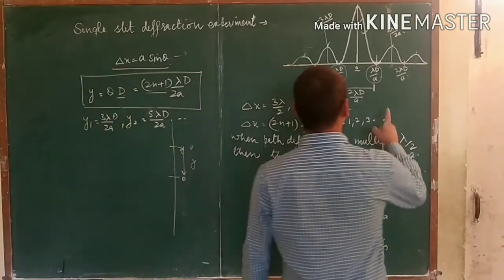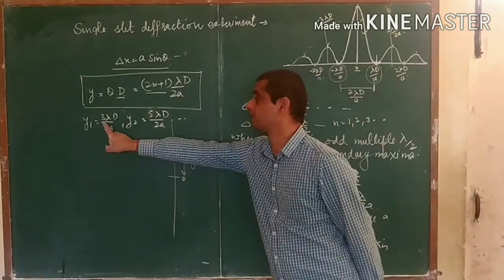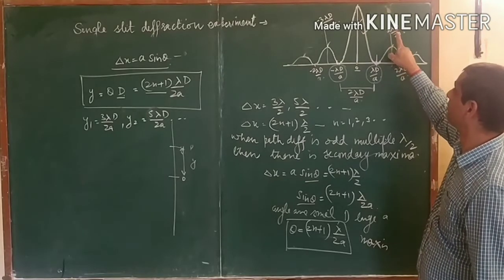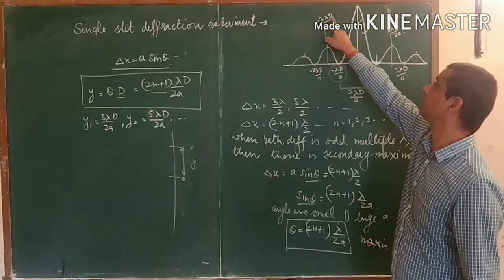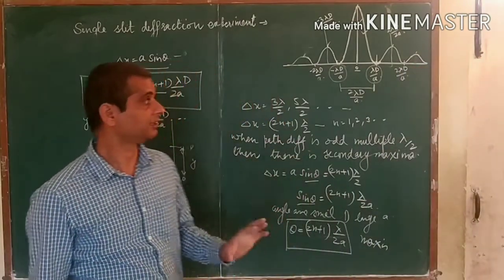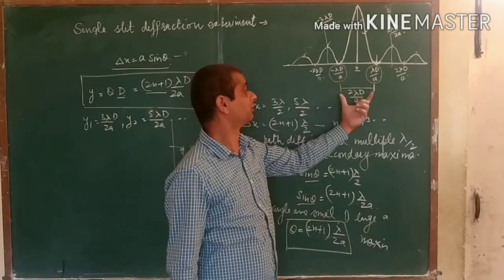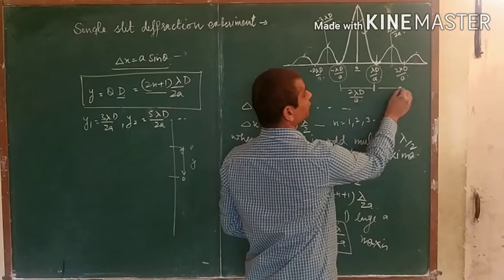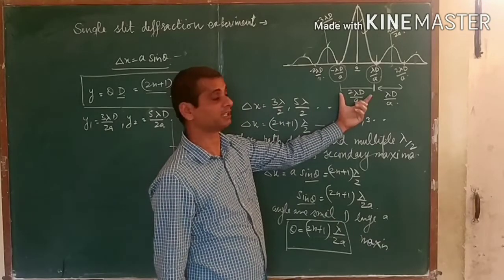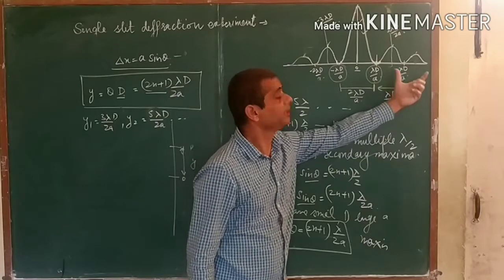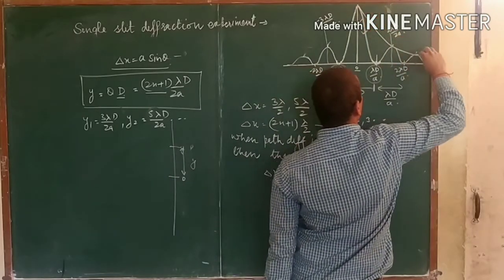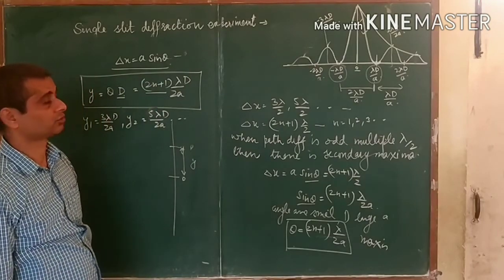Plotting these on the graph, the first secondary maximum is at 3 lambda·D by 2a, and on either side at minus 3 lambda·D by 2a. The central maximum has higher intensity and its fringe width is 2 lambda·D by a, while the fringe width of each secondary maximum is lambda·D by a. This means the central fringe width is twice that of the secondary maximas. The intensity dies out exponentially as we go to higher orders of maxima in single-slit diffraction.